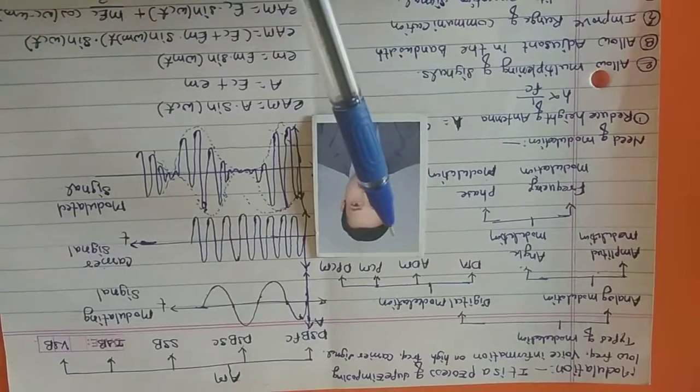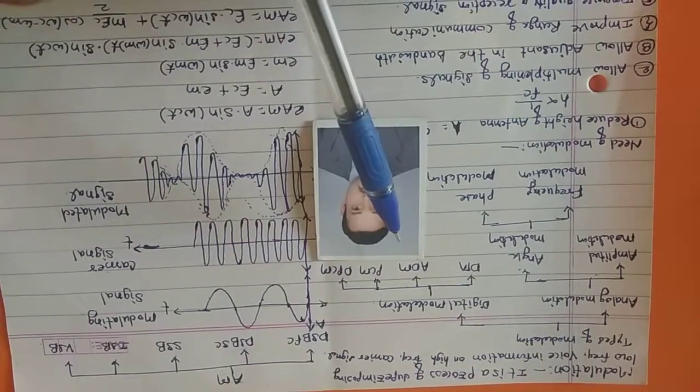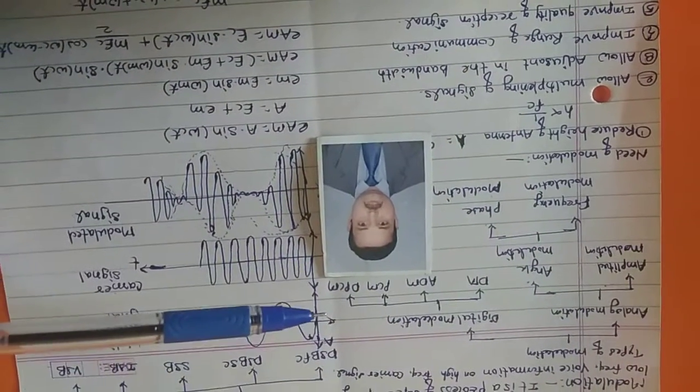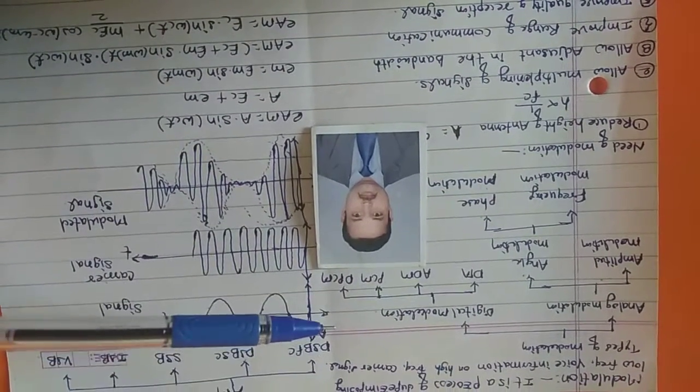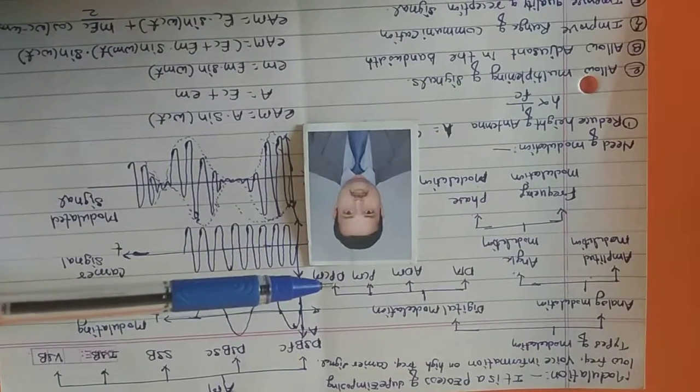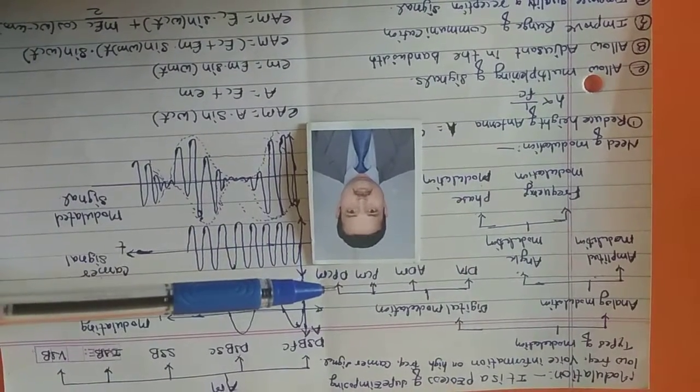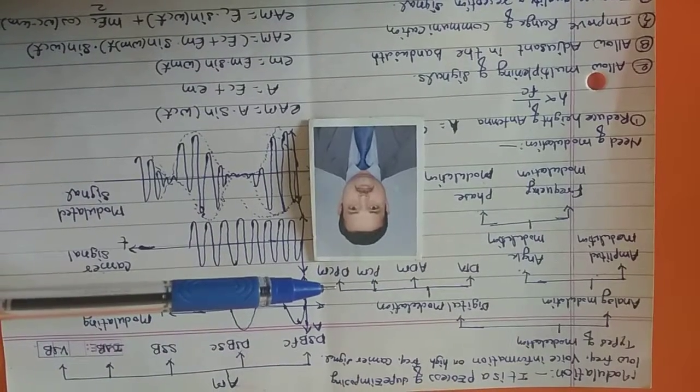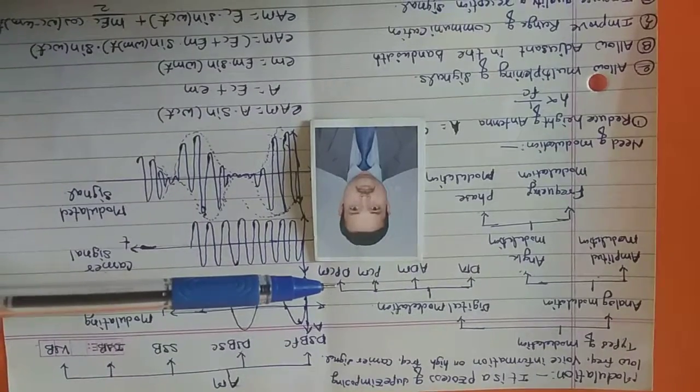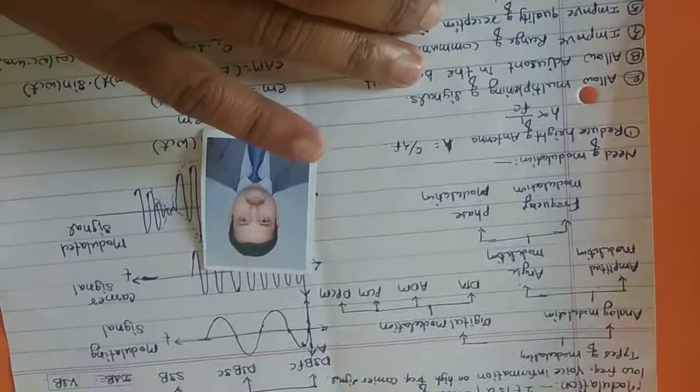Take a simple example. A person is traveling from point A to point B. The person is traveling on a bike. So the person is the modulating signal, the bike is the carrier, and the person on the bike is the modulated signal. Point A will be the source, point B will be the destination, and the road is the channel.